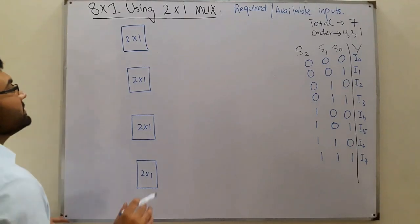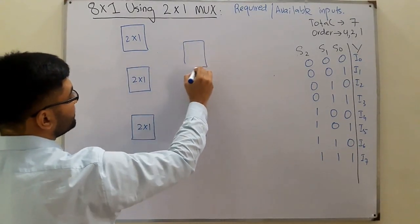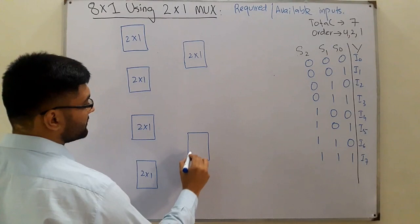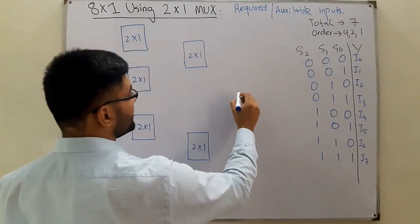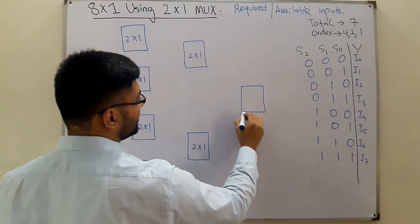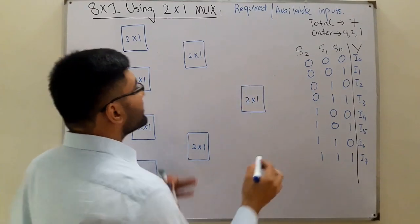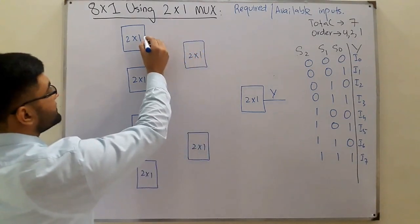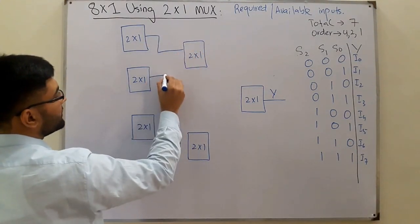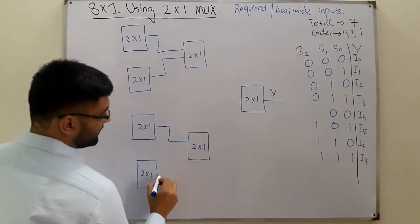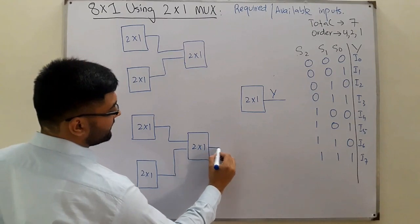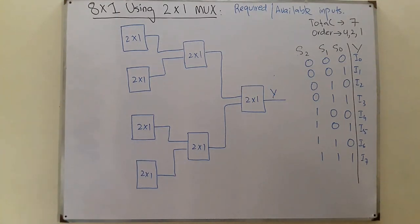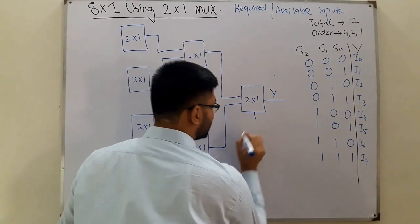Then we have 2, which means the output of the first two muxes is given to one 2x1 mux, and the output of the next two is given to another 2x1 mux. Finally we have 1, meaning the output of those two second-stage muxes feeds into a single final 2x1 mux, and the final output comes from there.